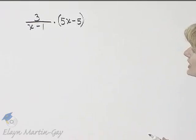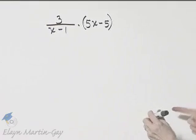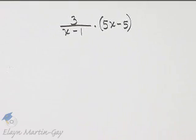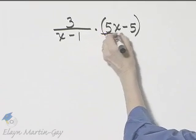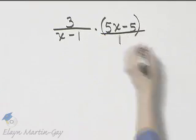Here I have 3 over x minus 1 times the binomial 5x minus 5. I'm multiplying, and if you'd like, you can think of it as this over 1.